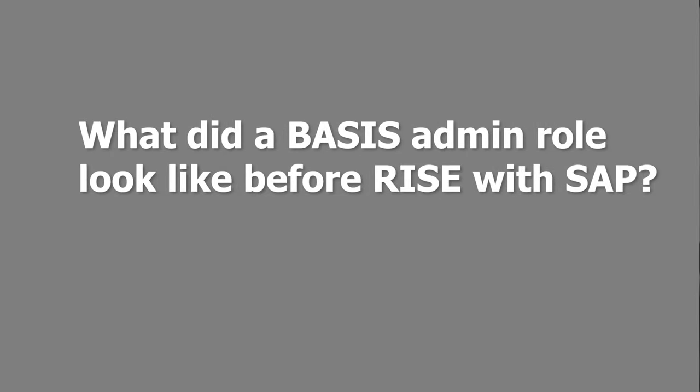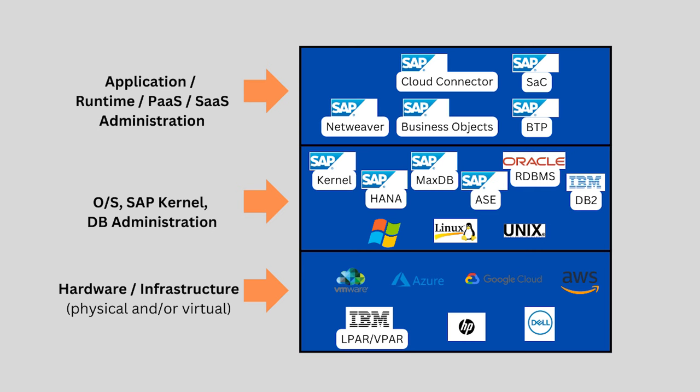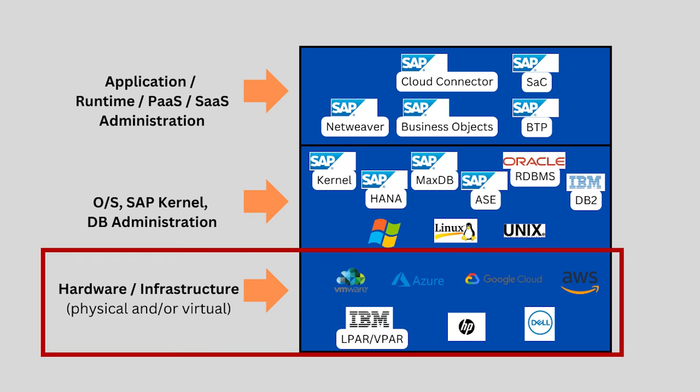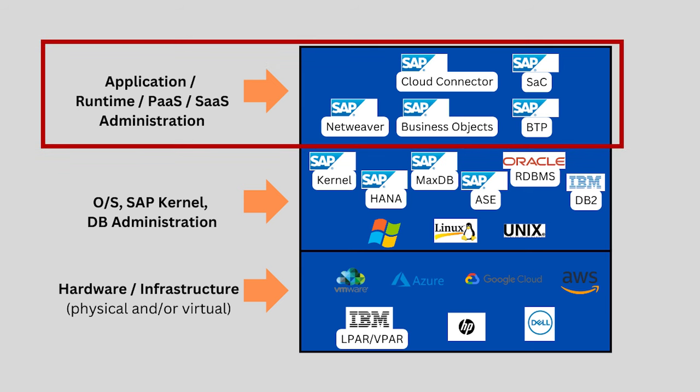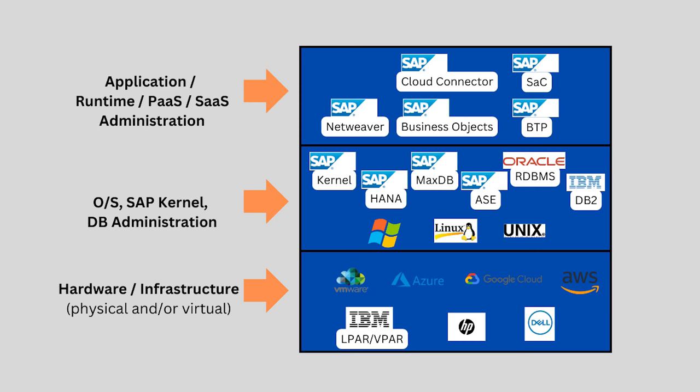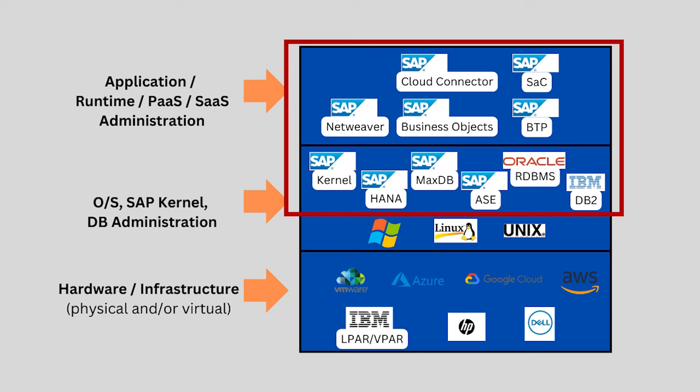Let me explain the typical scope of the SAP Basis Administrator role before RISE. A typical SAP Basis Administrator role was scoped across infrastructure, technical, and application layers. The infrastructure could be physical or virtual. Some larger companies divide this scope into specialist team areas, with cloud teams administering virtual machines, server administrators taking care of the operating system layer, and SAP Basis only administering the SAP technical layer and upwards.